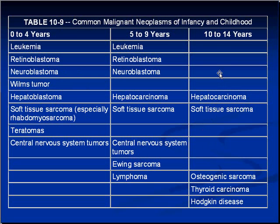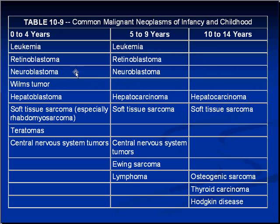In older kids you don't see retinoblastomas, neuroblastomas, Wilms tumors, or leukemia. Instead you see things like hepatocarcinoma, soft tissue sarcomas, and even thyroid cancer and Hodgkin's disease — a lymphoma we'll cover in the chapter on lymphomas. Brain tumors are also considered solid tumors in kids, also in the younger age group. There seems to be a dividing line between kids younger than 10 versus older, with three or four of the most common tumors disappearing entirely after age 10.